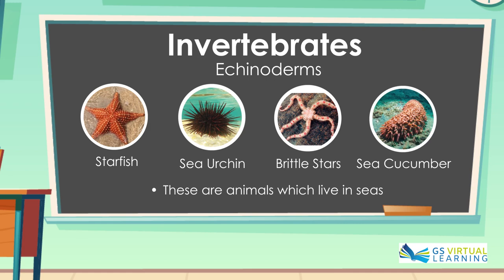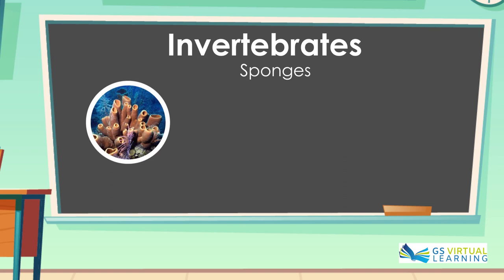The third group of invertebrates are the Sponges. They live in water and in colonies. They breathe and feed through the holes in their bodies.